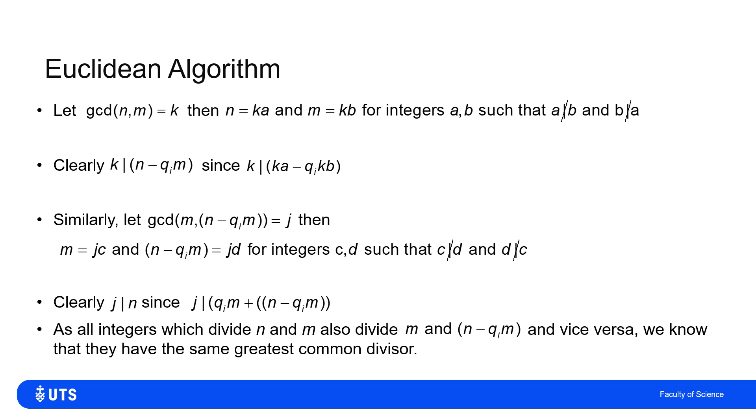So I've shown that all integers that divide N and M also divide M and N minus qi lots of M, and the same the other way around. So if they've got the exact same numbers divide them, then they've got the same greatest common divisor as well.